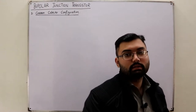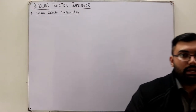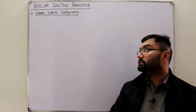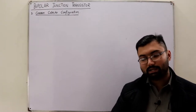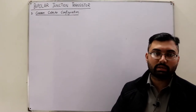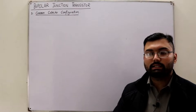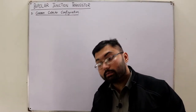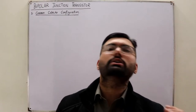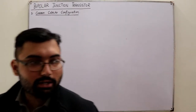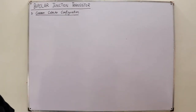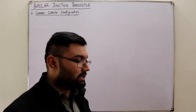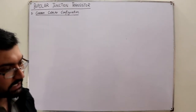Bismillahirrahmanirrahim, assalamu alaikum. Salar Khan here with the final BJT configuration — the common collector configuration. We're done with the common base and the common emitter; today is the final one, the common collector configuration. The weather is extremely beautiful outside, so I will have to wind up this video and go out for a walk, so if I am going a little quickly, I apologize.